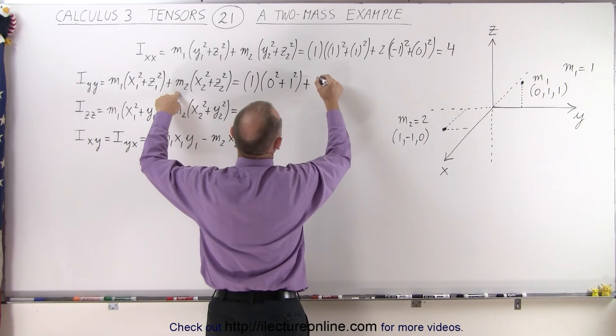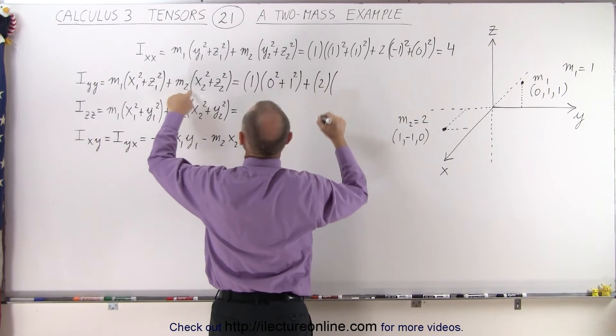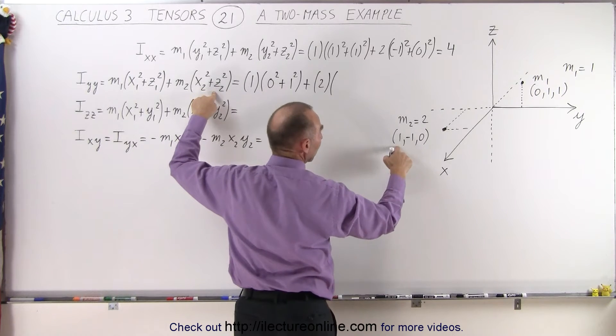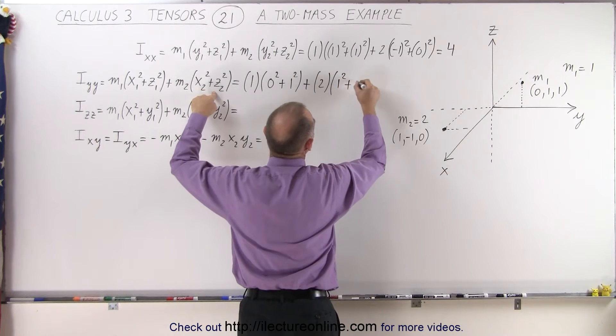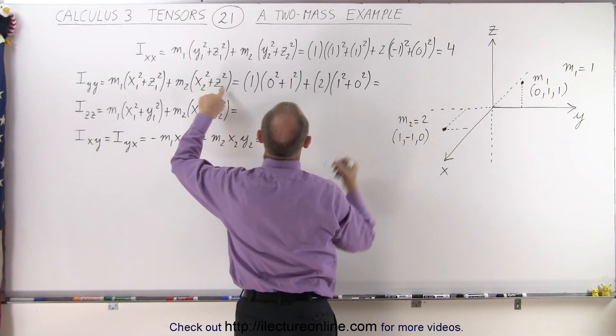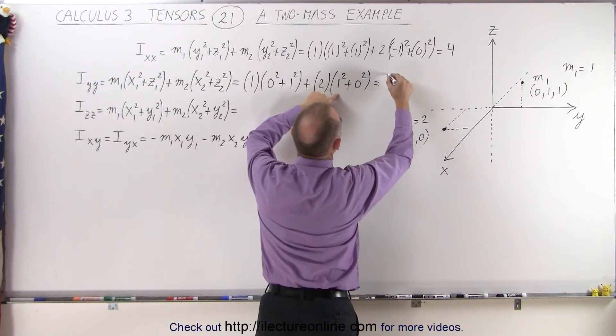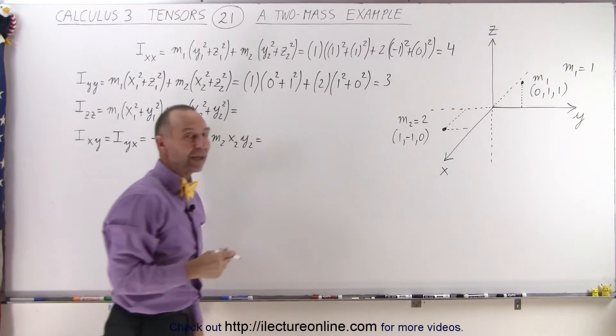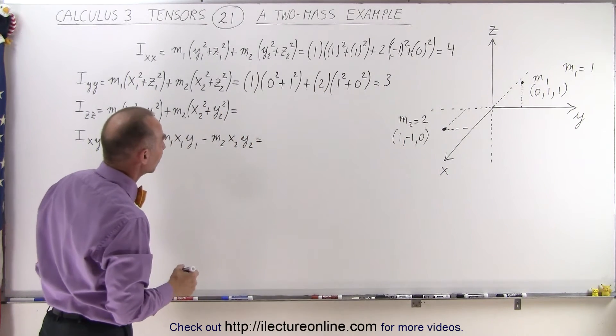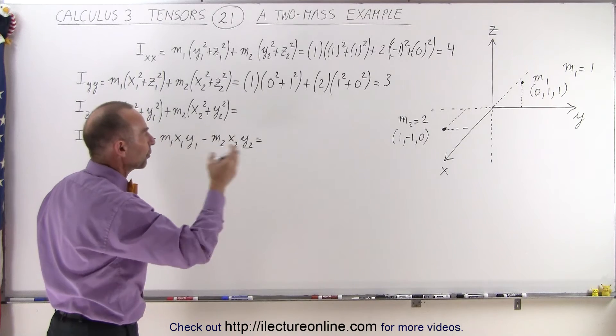Plus the second mass, which is 2 times x squared plus z squared. X squared, that's 1 squared. Z squared is 0 squared. So here we have 1 times 1, and we have 2 times 1. That would be a total of 3. So that's the value of the moment of inertia relative to the rotation around the y-axis.